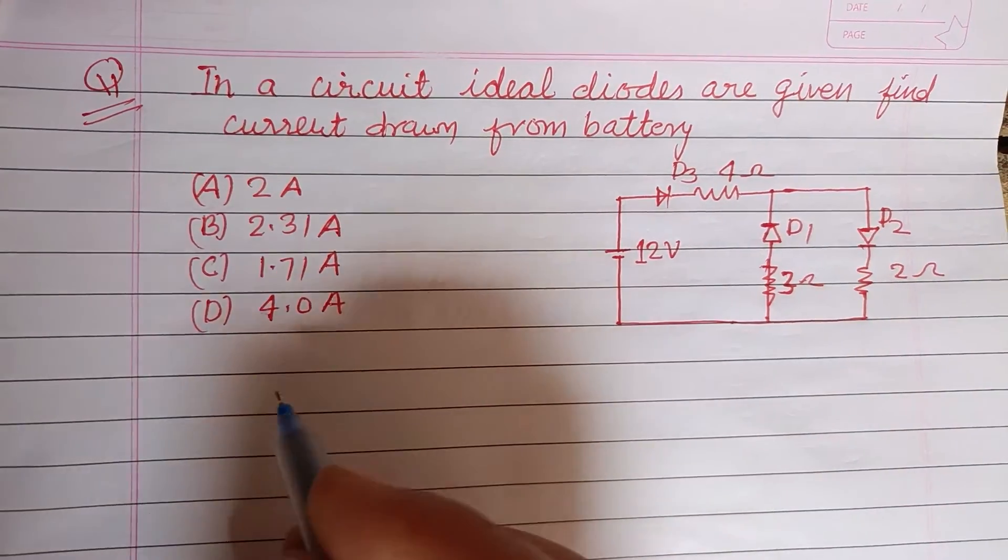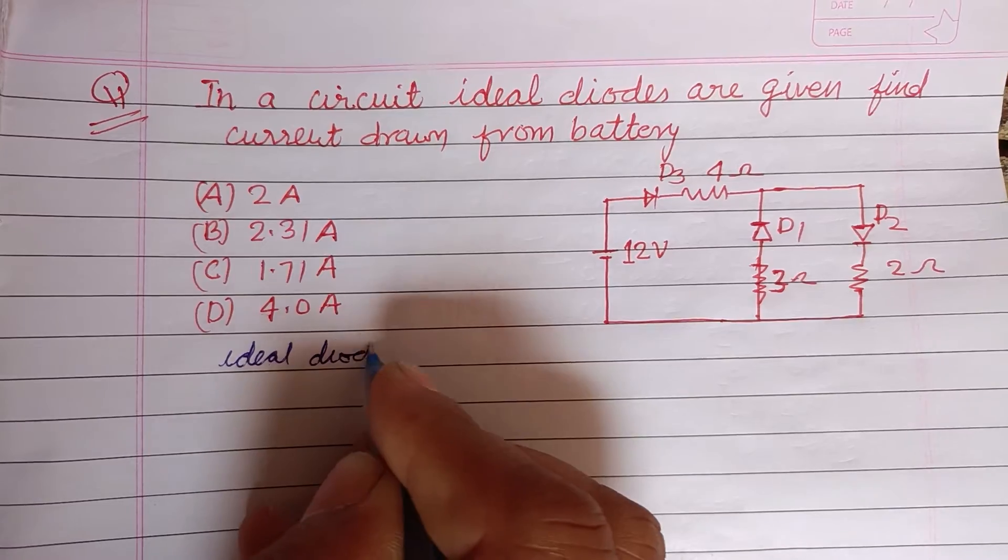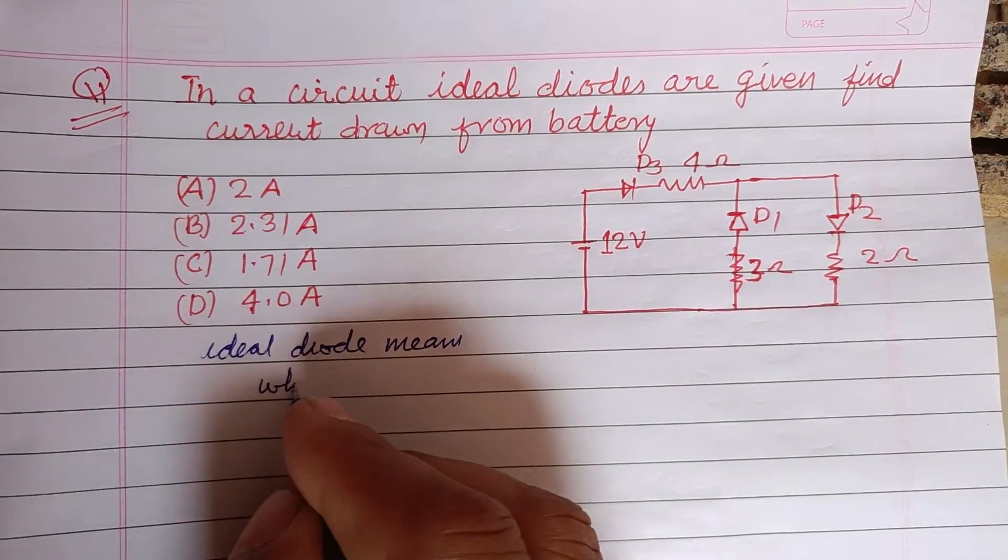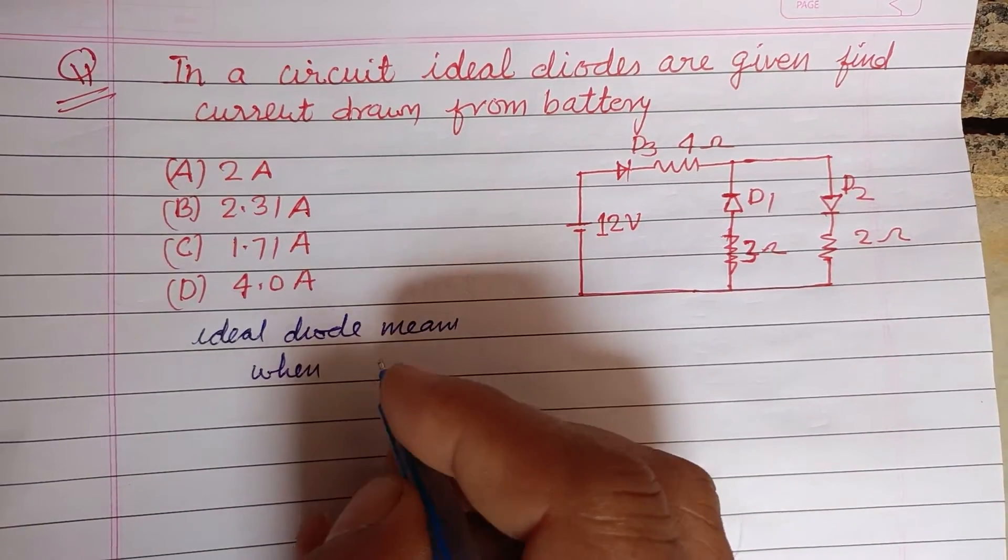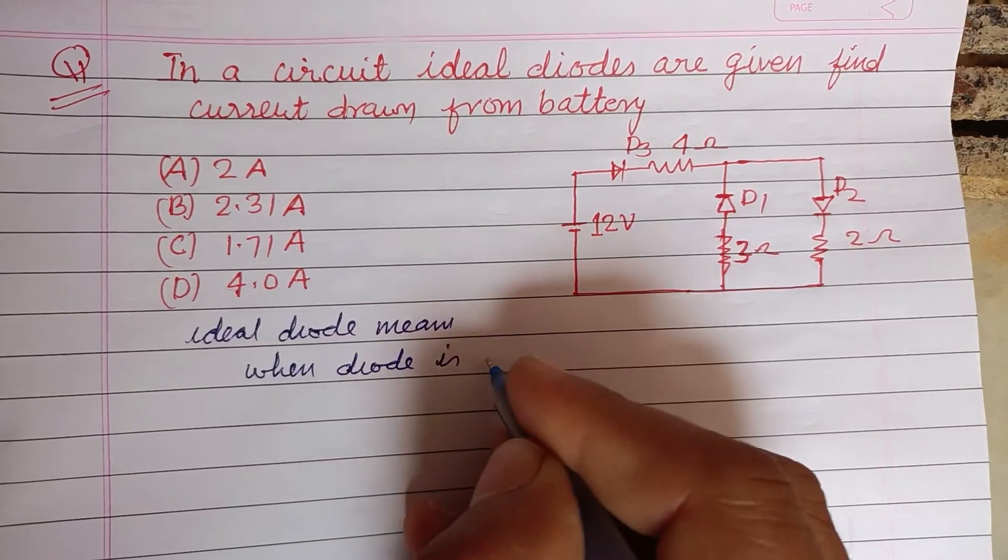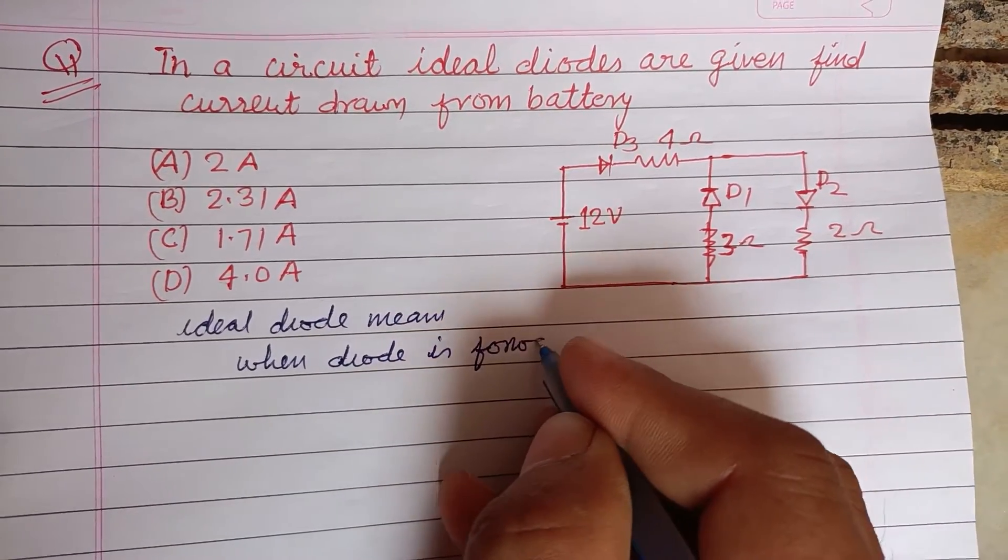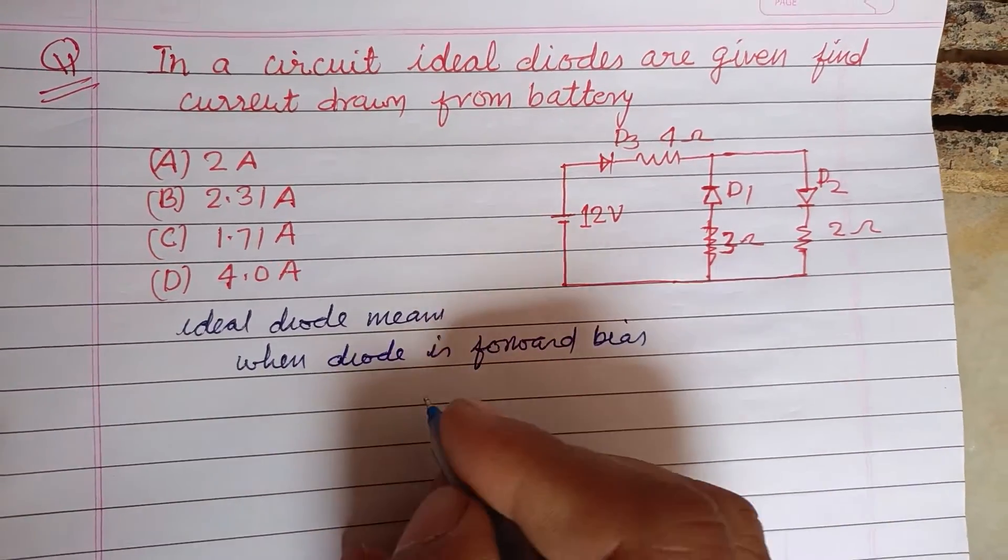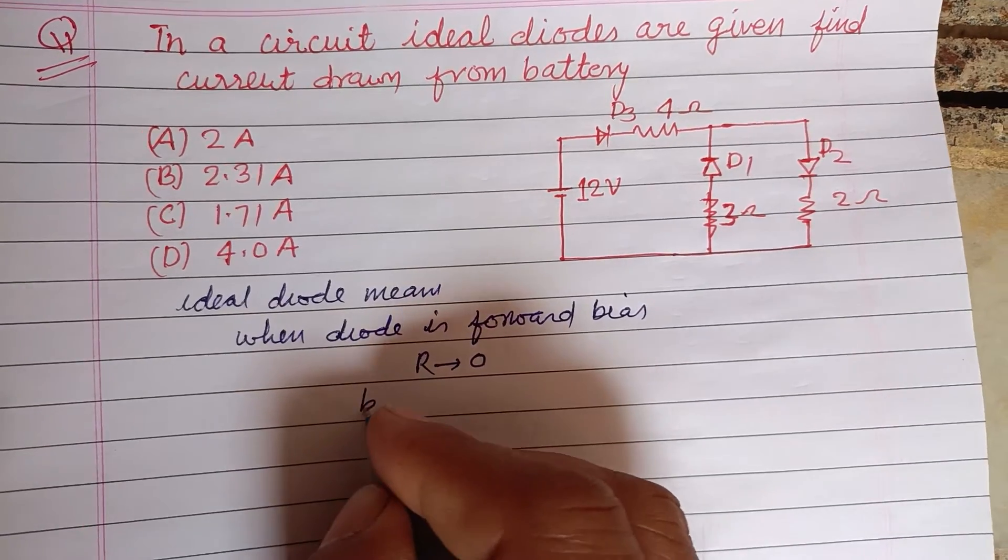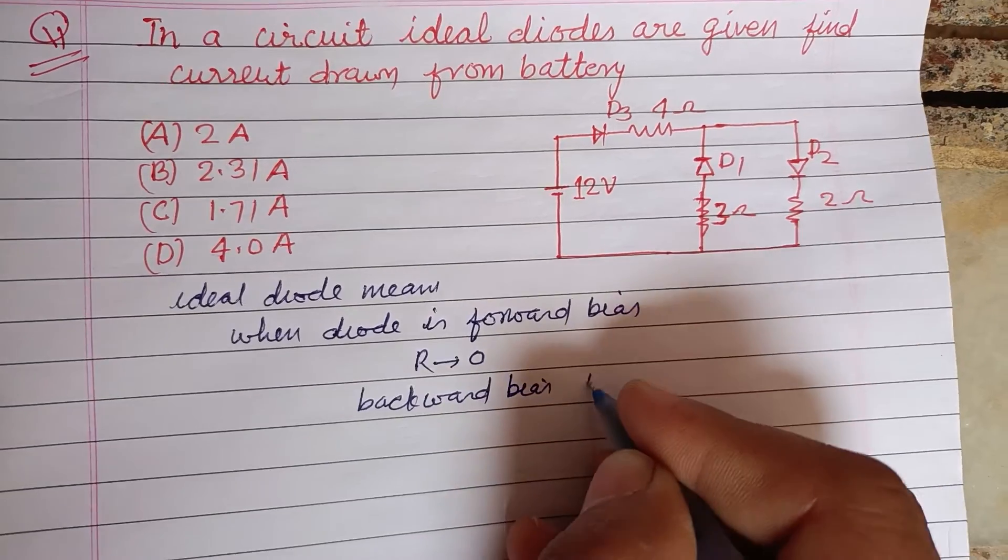Here ideal diode is given. Ideal diode means when diode is forward biased, its resistance is zero. When it is backward biased, its resistance is infinity.